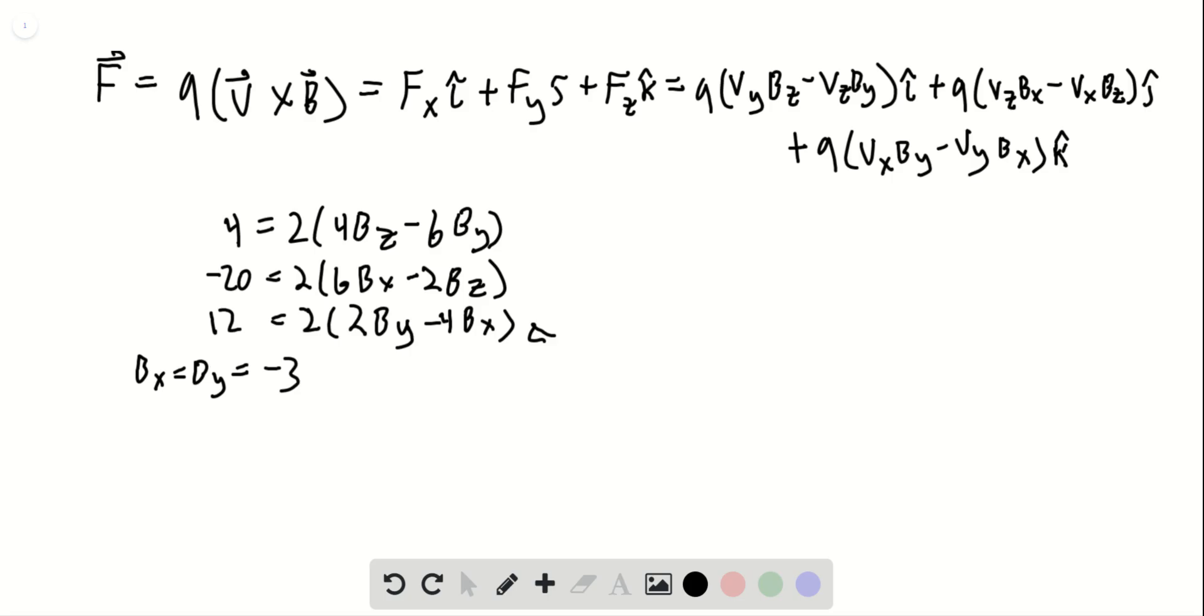And then we can use that and plug in any other ones to find out that bz equals negative 4. So finally, b equals negative 3i hat minus 3j hat minus 4k hat.